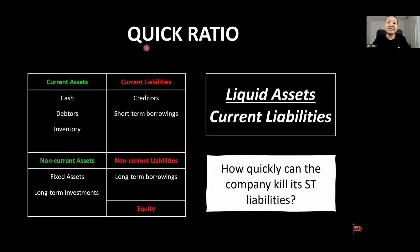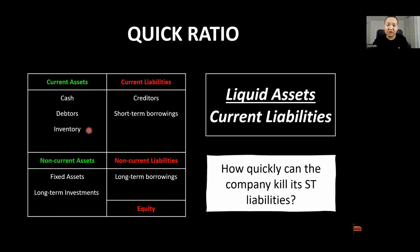Now we get to the balance sheet ratios. The quick ratio is your liquid assets over current liabilities. Liquid assets means anything that is cash or near-cash. To get there, take the current assets and deduct the stock — the stock hasn't been sold yet, so it's not liquid. What is liquid? Your cash and your debtors. Take current assets, deduct inventory — that's your liquid assets. Put it over your current liabilities.